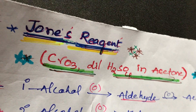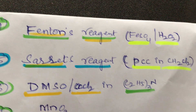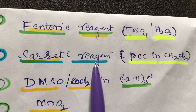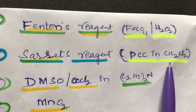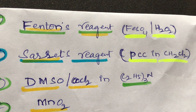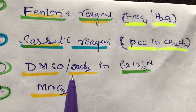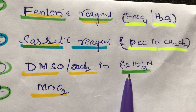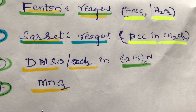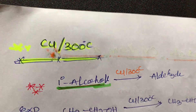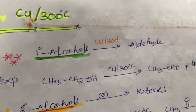Some other important moderate reagents are Fenton's reagent (FeSO4/H2O2), Corey's reagent (PCC in dichloromethane), Swern oxidation (DMSO in the presence of COCl2 and triethylamine), and MnO2.